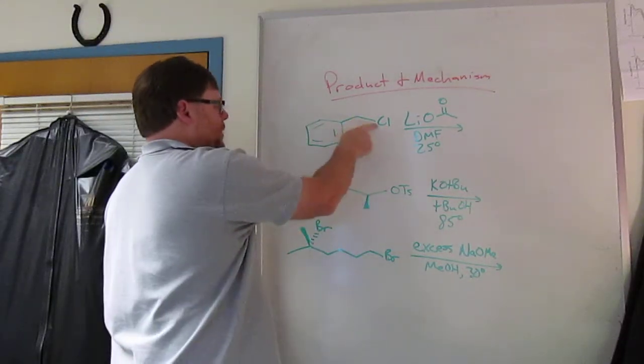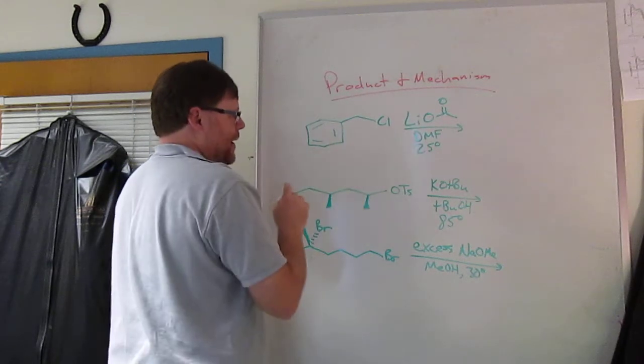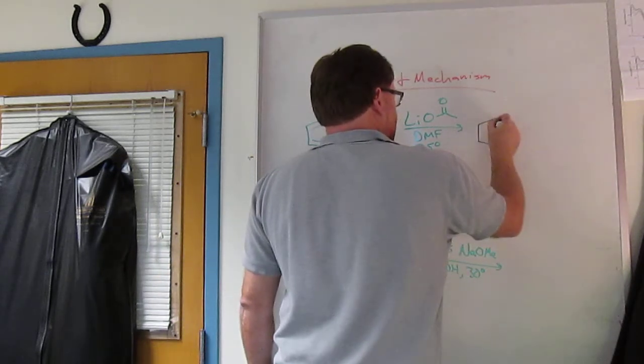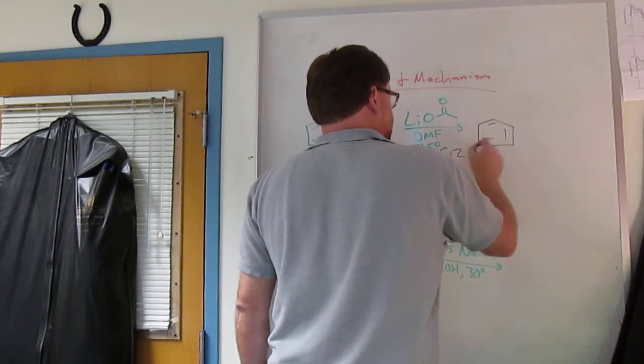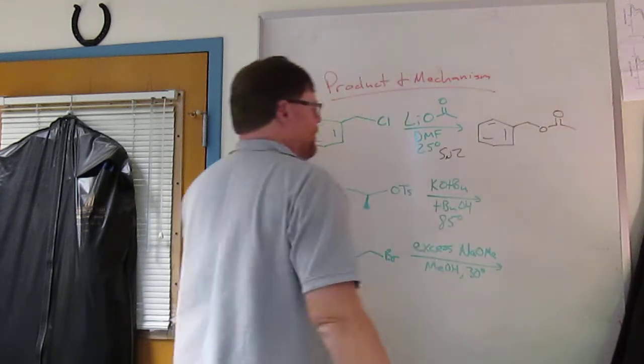Okay, so leaving group chloride, no beta hydrogen, no elimination. You have a good nucleophile and an acetate, polar aprotic solvent. So this is going to be an SN2 reaction, and you're going to wind up with benzyl acetate.